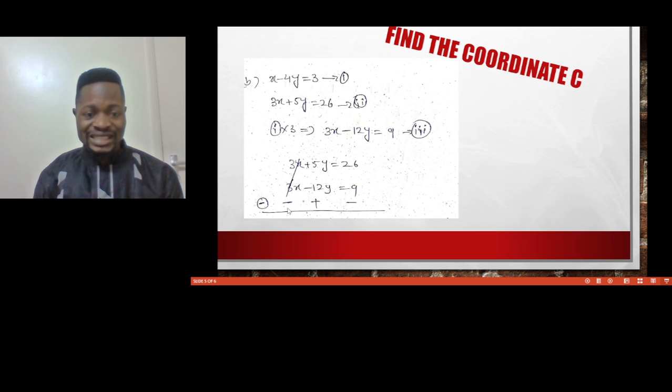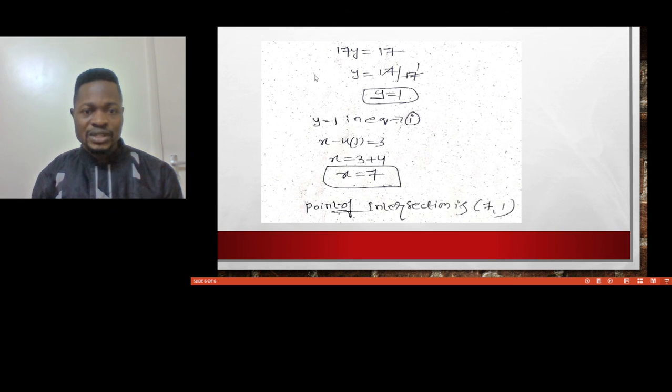We apply the sign symbols: 5 plus 12 gives us 17, and 26 minus 9 gives us 17. So 17Y equals 17. If we divide both sides, Y equals 1.